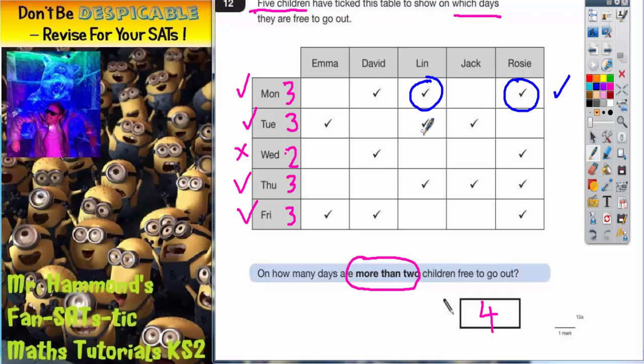On Tuesday Lynn is free but Rosie isn't, so Tuesday they're not both free. On Wednesday Lynn is not free but Rosie is, so again because Lynn's not free they can't both go out. On Thursday Lynn is free and Rosie is also free, so they're both free to go out together on Thursday. And on Friday Lynn is not free but Rosie is, so because Lynn's not free they can't go out together.